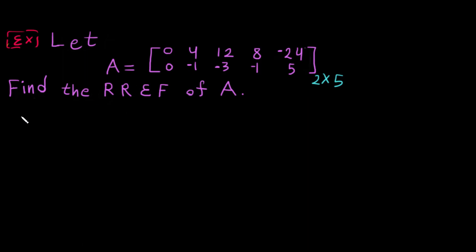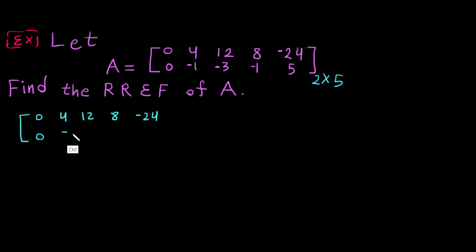First we have to rewrite it again. The matrix is: 0, 4, 12, 8, negative 24 in the first row, and 0, minus 1, minus 3, minus 1, 5 in the second row.